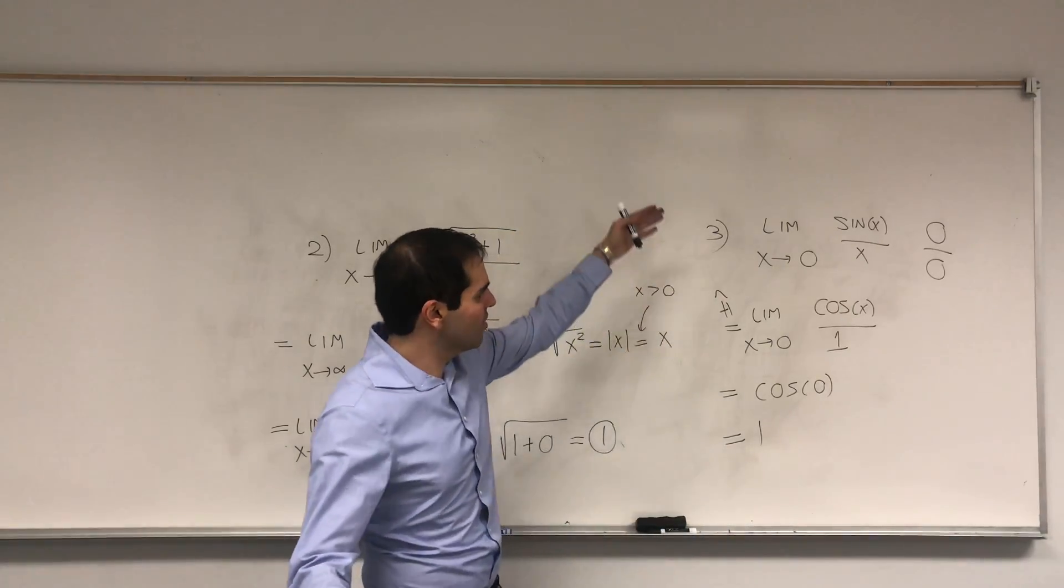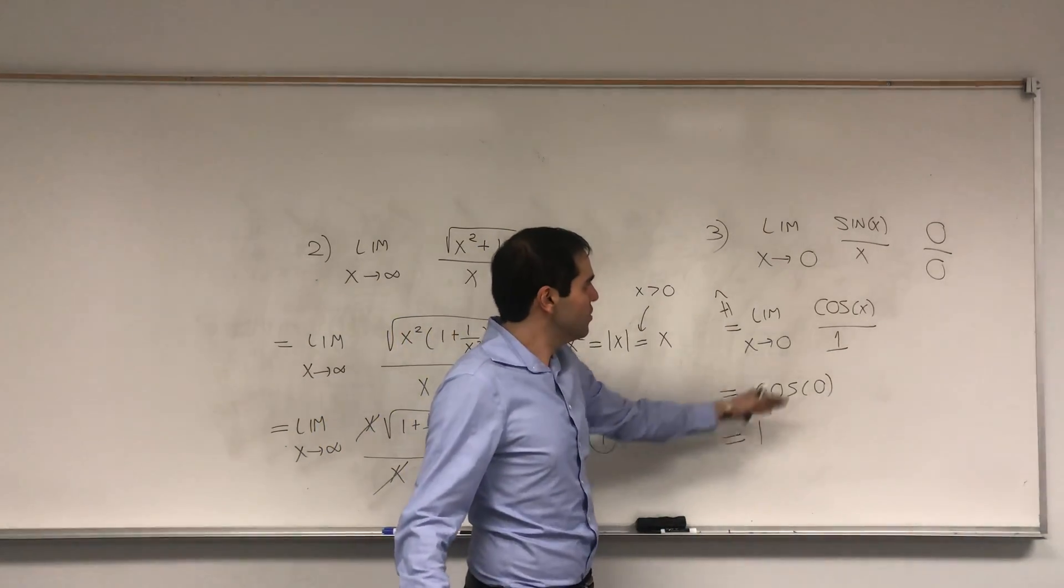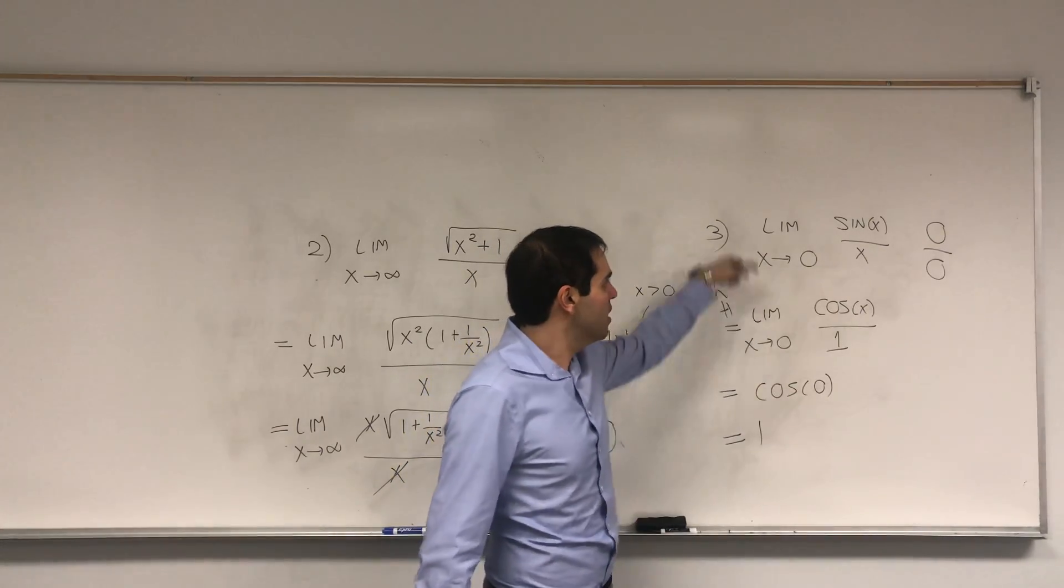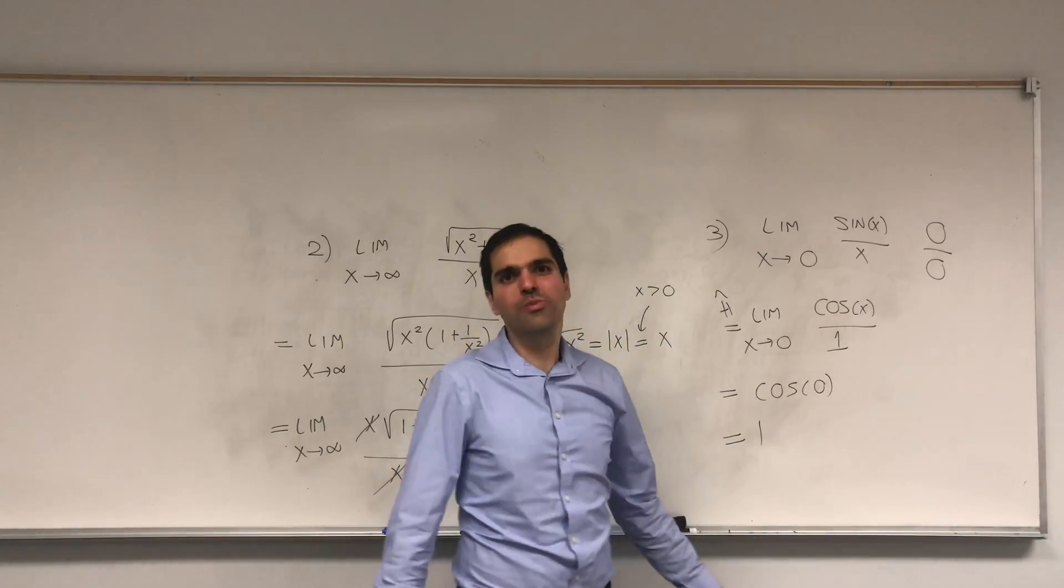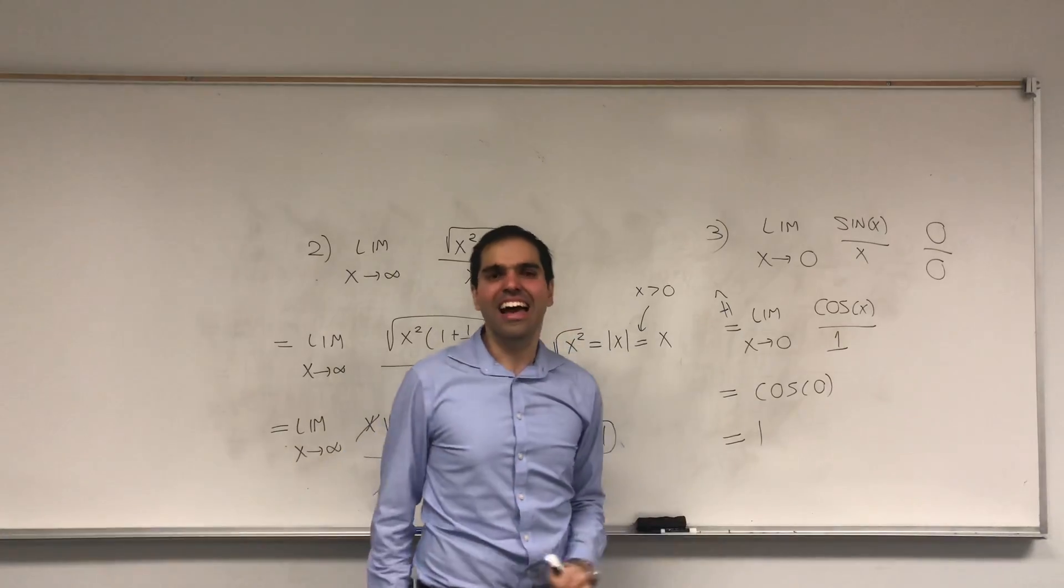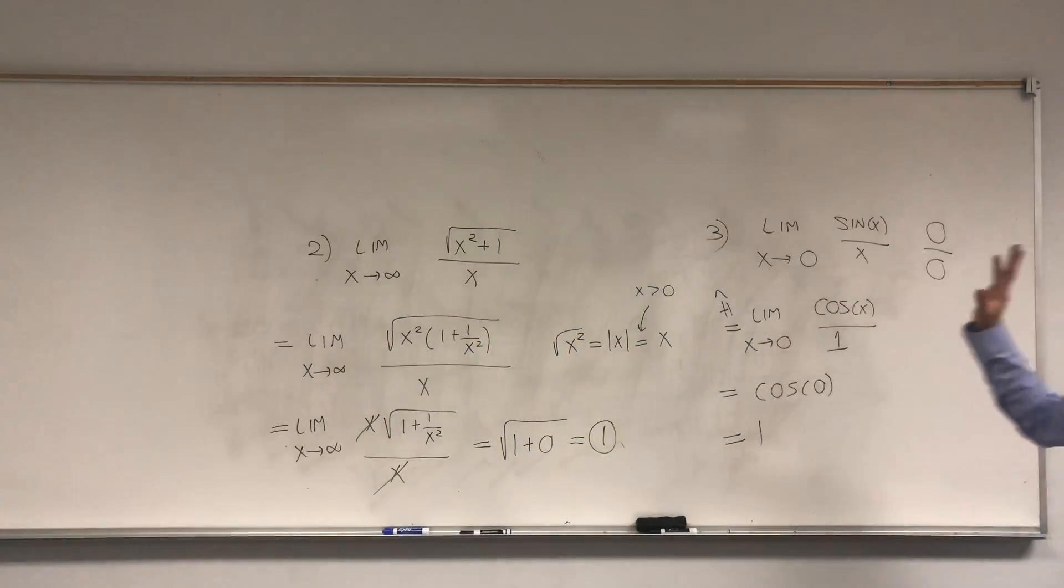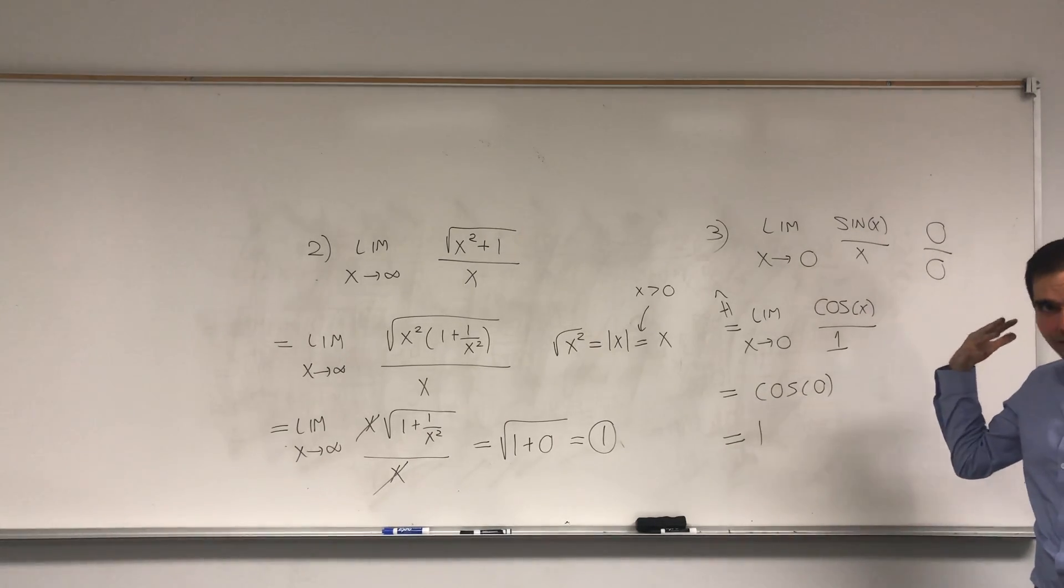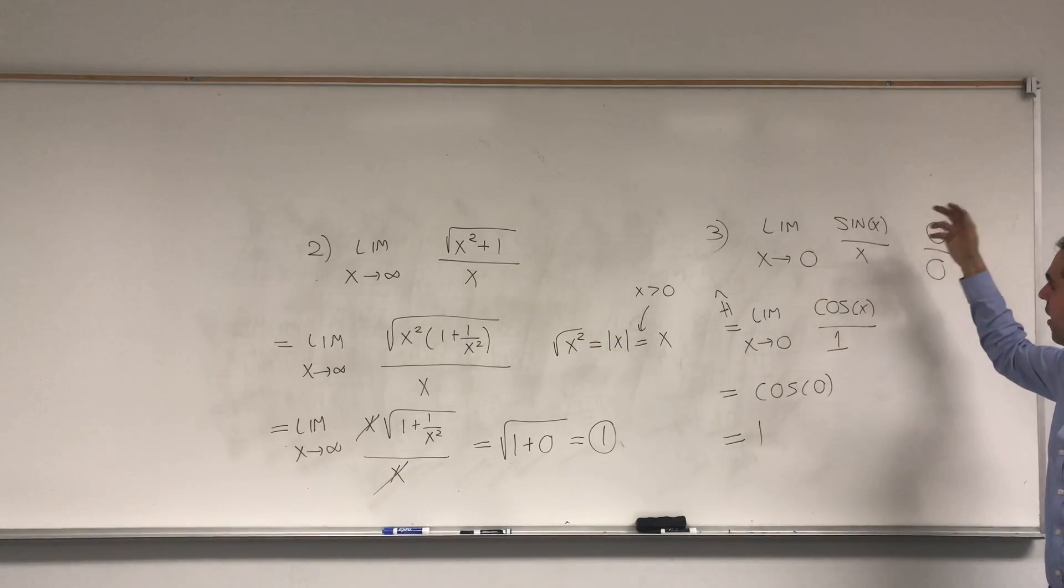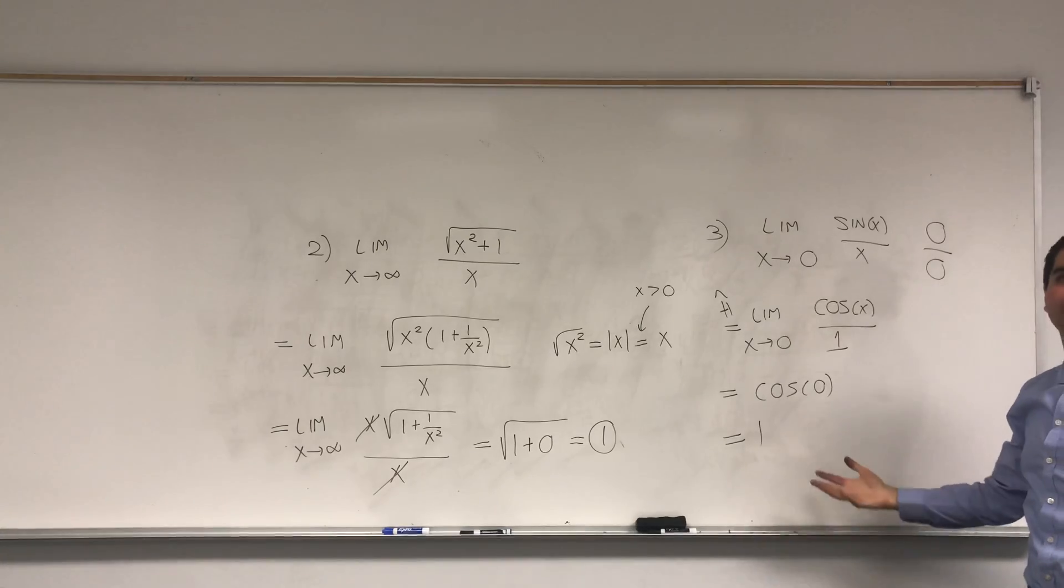In order to show something, you cannot assume what you want to show. In particular, if you have this limit, you show that sine prime is cosine, but if you do it this way, you assume sine prime is cosine, and that's a big no-no. So, strictly speaking, nothing wrong with this proof, but mathematically speaking, it's wrong, because, again, to show this is 1, to show that sine prime is cosine, we need that limit to be 1.